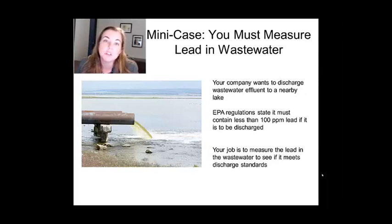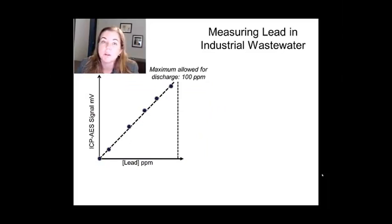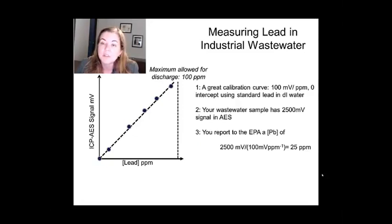You make up a set of concentration standards ranging from zero up until about 200 parts per million. A very nice calibration curve, as you can see here. And you calculate an instrument response function, and you find that you have a concentration of lead in the water of 25 ppm, which is great, because that means you're well below the EPA limit, and your treatment processes are doing exactly what they should be.